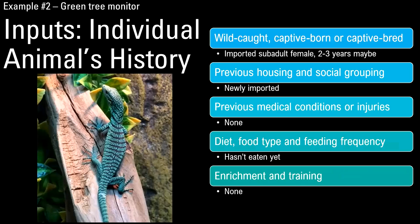In this example, we have an imported sub-adult female green tree monitor that was recently imported, set up in an enclosure, and hasn't eaten yet. We'll say it's been here for two weeks, staff haven't seen it eat, and haven't found poop. That doesn't necessarily mean it's not eating and pooping, but they're not seeing enough of it to the point where it's concerning and would lead to a welfare assessment.